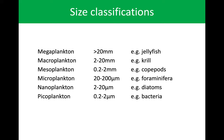As far as size classifications go, we break it down into these classes. Megaplankton — our very largest — are jellyfish, greater than 20 millimeters. Macroplankton are two to 20 millimeters — krill fall in that category. Copepods are a little bit smaller — we consider them mesoplankton, 0.2 to two millimeters. Microplankton is where we start to find our larger diatoms, foraminifera, and dinoflagellates. Nanoplankton is where most diatoms fall, along with some smaller dinoflagellates. Picoplankton is mostly made up of bacteria.